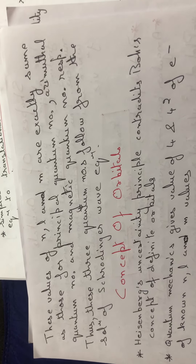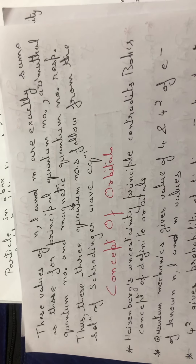These values of n, l, and m are exactly the same as those for the principal quantum number, the azimuthal quantum number, and the magnetic quantum number respectively. Thus these three quantum numbers follow directly from solving the Schrödinger wave equation — the same values we have studied are now proven to arise naturally from the Schrödinger equation.